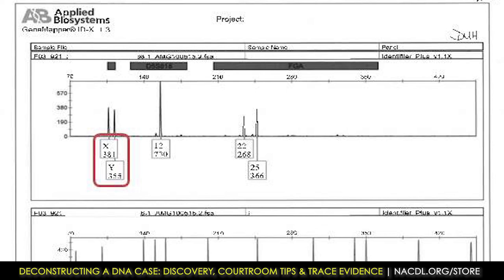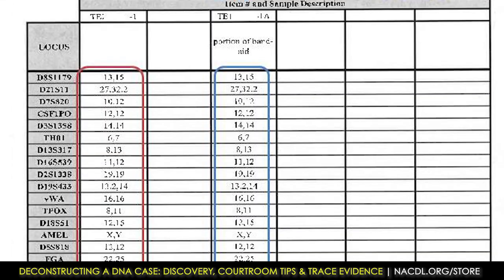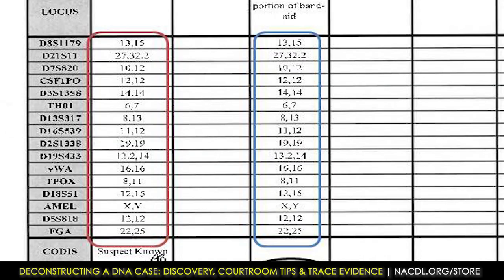Then we have the summary sheet that tells us the suspect known and then compares it to the evidentiary sample—the band-aid. In this case, it looks like the suspect pretty much matches the evidentiary sample of the band-aid.